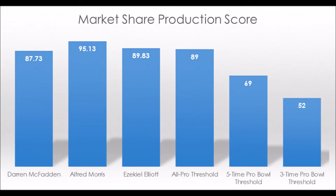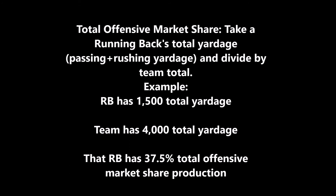Starting with production at the college level, one thing that all these backs have in common — when you're talking about McFadden, Alfred Morris, and Ezekiel Elliott — is they all had very high-end total offensive market share production. Total offensive market share production, for people not familiar with this term, is you take a running back's total yardage — rushing plus passing yardage gained — and divide it by the team's total yardage.